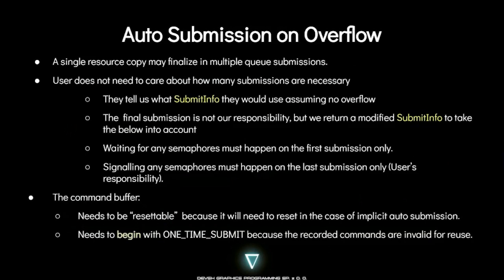What we saw in the previous slide was auto submission and overflow. A single resource copy may consist of multiple queue submissions — this can be due to many reasons. The resource may be too big for the staging memory, or the staging memory may be fragmented or currently in use. The user does not need to care about how many submissions are necessary; our submissions are transparent in our tool. Users tell us what submit info they would use assuming there would be no overflow. The final submission is not our responsibility, but we modify it to take these notes into account: waiting for any semaphores must happen on the first submission only, and signaling any semaphores must happen on the last submission only, which is the user's responsibility.